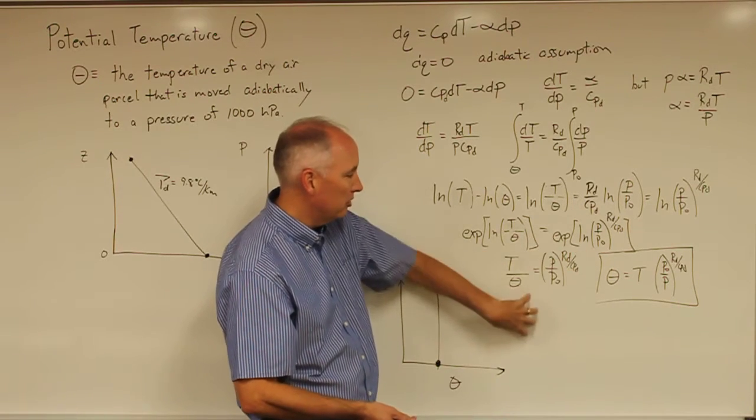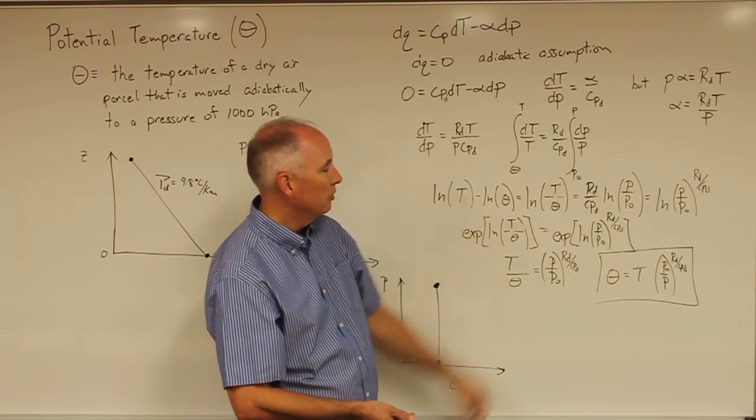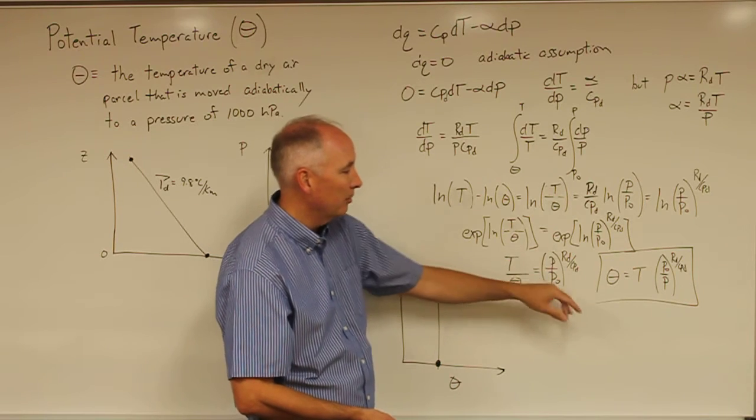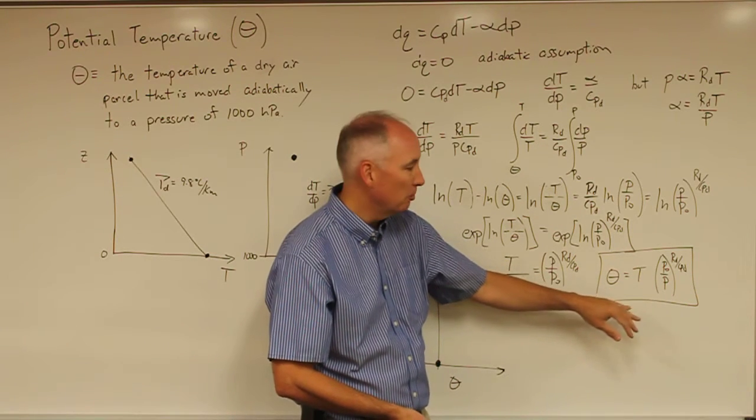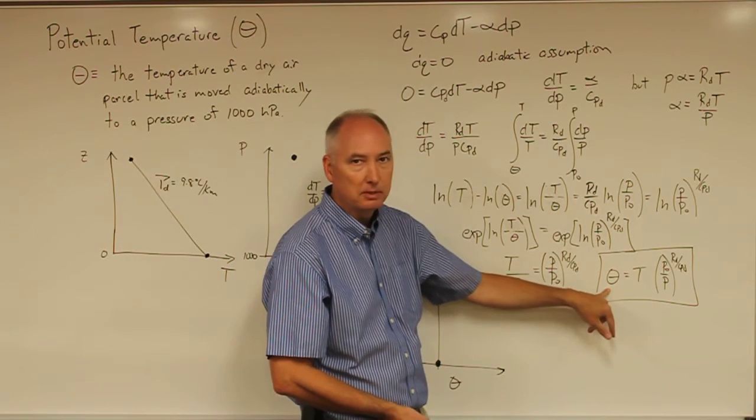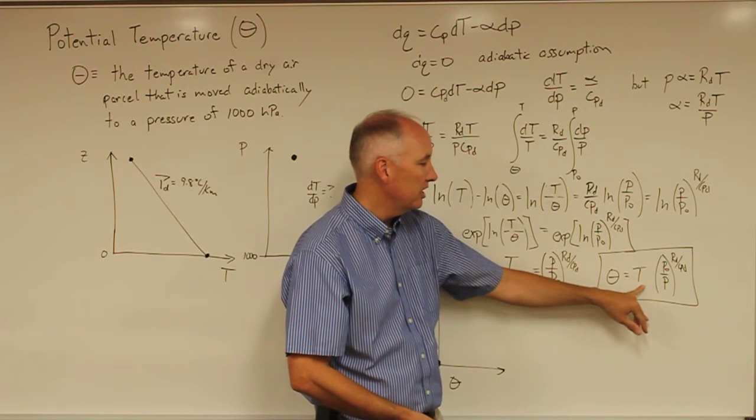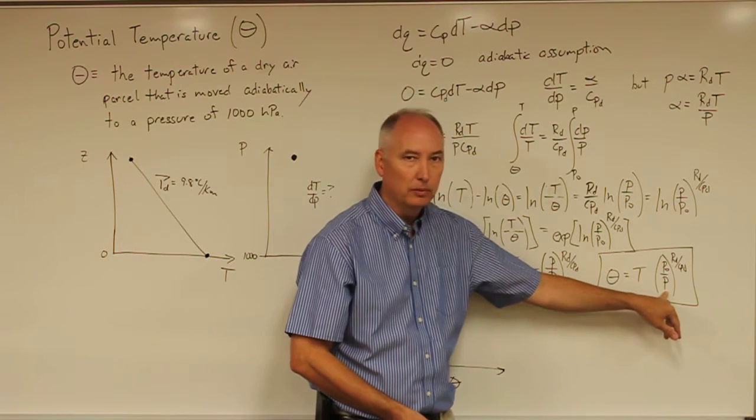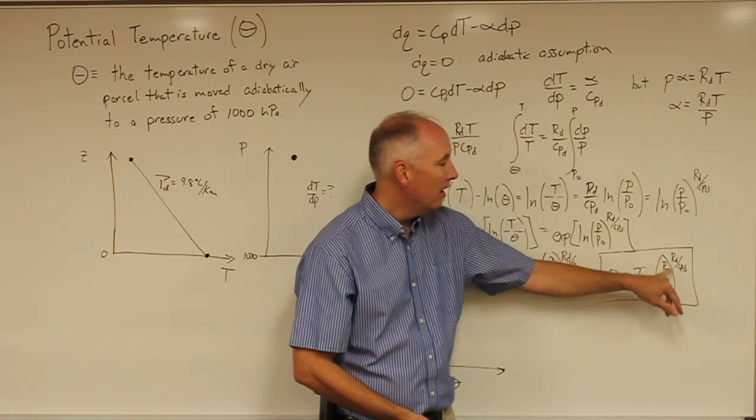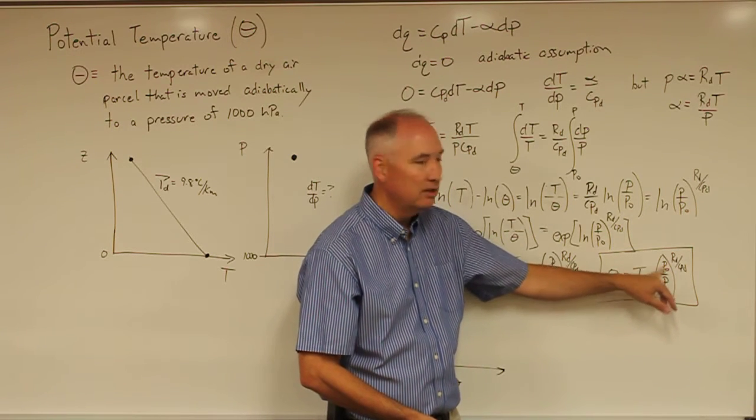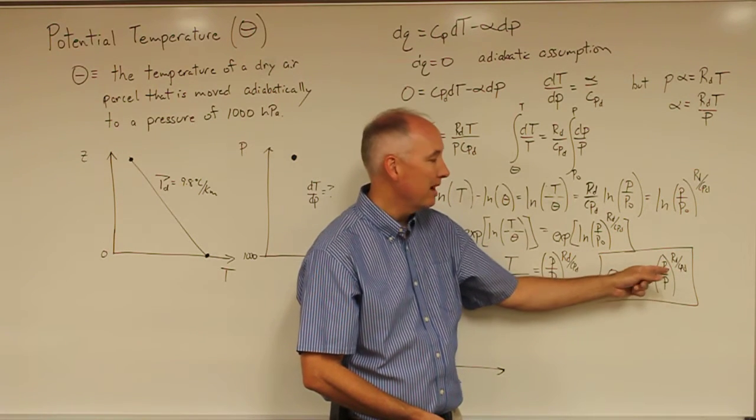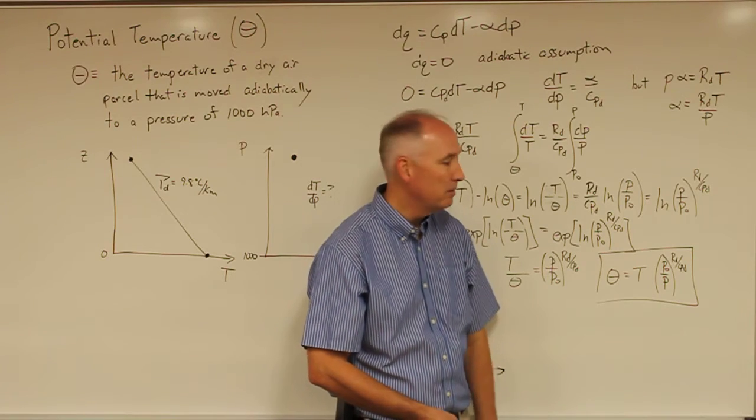Move theta over here, pull this to the denominator. You can actually flip that around and you'll end up algebraically with theta, the potential temperature, is equal to T, the temperature at the original P pressure, times P0 over P to the power of R sub D over C sub PD.